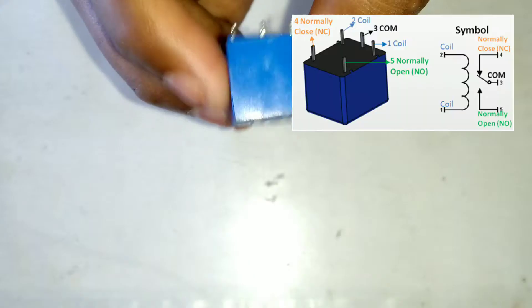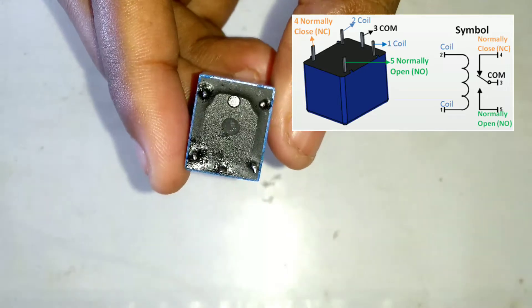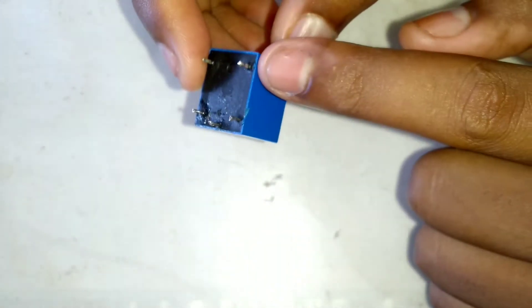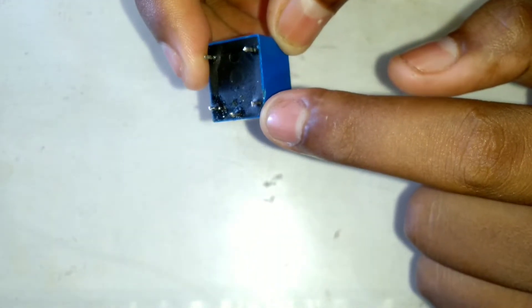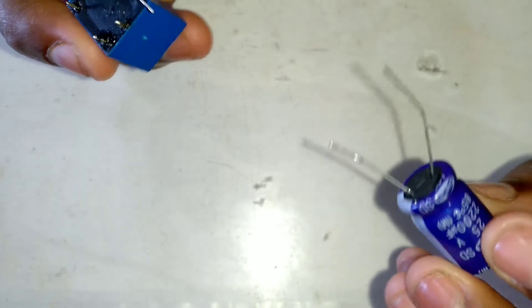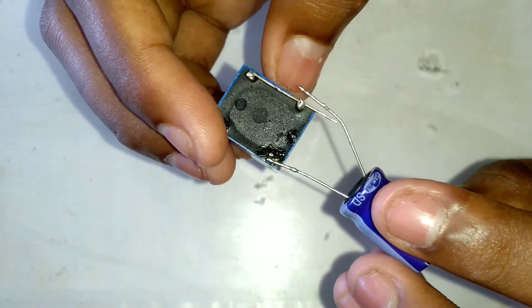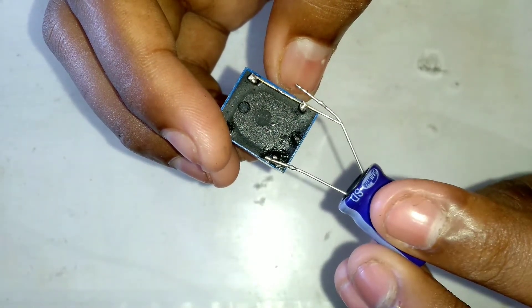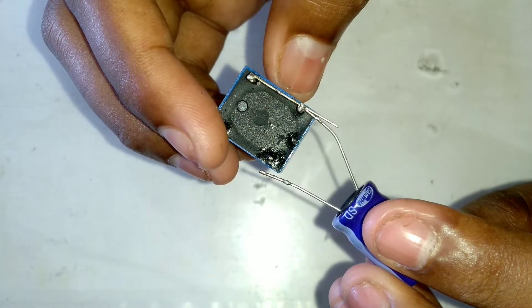First of all, we have a 6 volt relay with pins. First, NC and Coil 1 both have a short. We have a 200 microfarad capacitor. One negative goes to Coil Number 2, and positive goes to Coil Number 1.